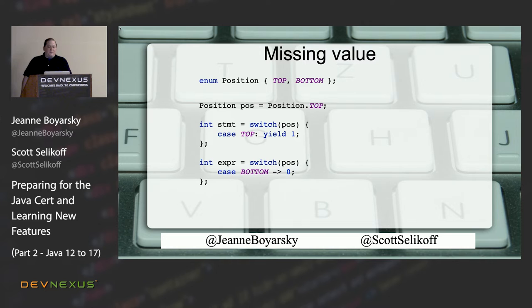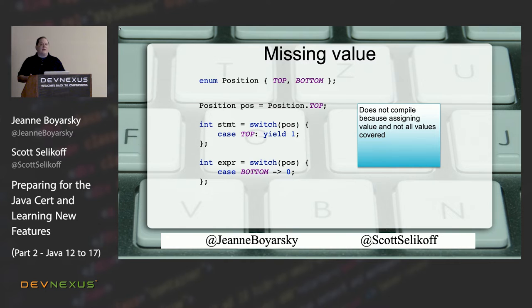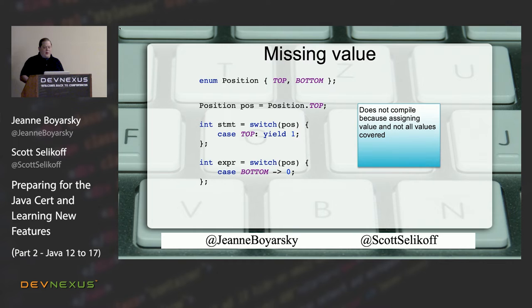Another example: how many think the first compiles? The second? Neither compiles. Switch expressions must handle every possible branch. With the TOP/BOTTOM enum, you must write a case for both TOP and BOTTOM, or include a default branch. If you don't, the compiler doesn't know what to assign when, say, BOTTOM is passed in — should it be null, negative one, zero? The compiler won't guess; it just won't compile.